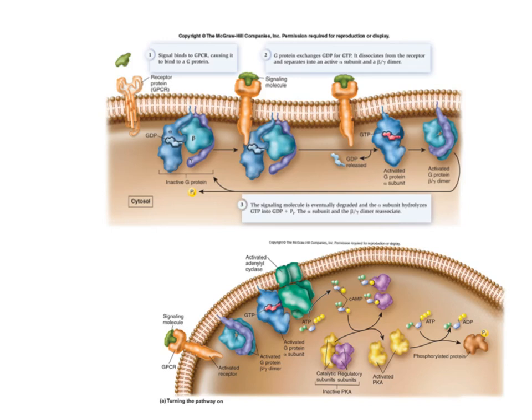Here we're going to review G protein signaling. This is the one signaling cascade pathway that you have to have memorized, at least through the first several steps. The reason for that is that this is one of the most common signaling pathways that cells can use. At the end of these steps it kind of diverges and you can get a lot of different responses, but this is a common technique for signaling with a lot of different cells. We know that by default a signaling pathway should be off.